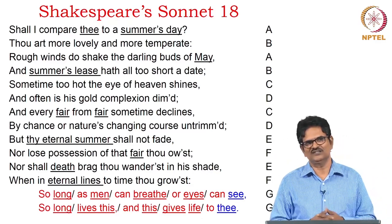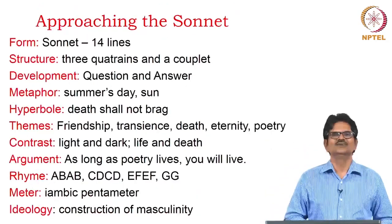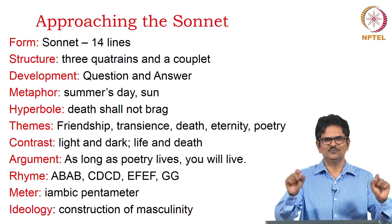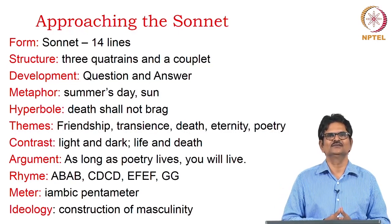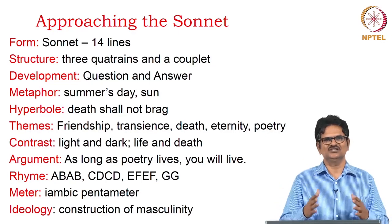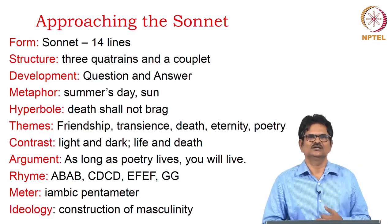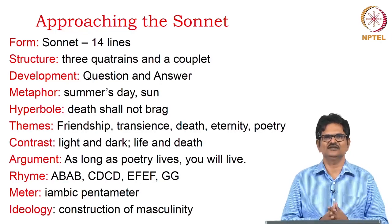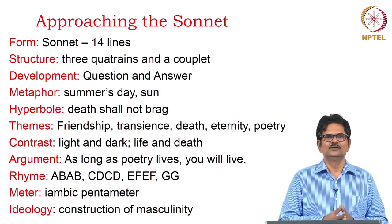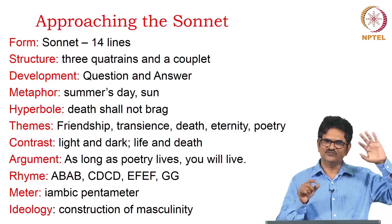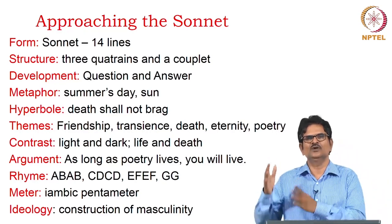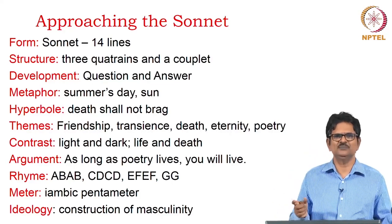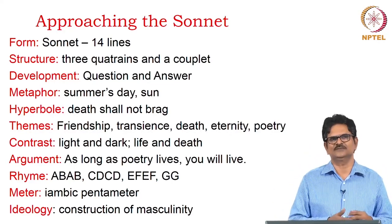This is a poem that Shakespeare wrote for his friend. Sonnet is a poetic convention — it has fourteen lines and a structure. Here we have the Shakespearean sonnet, a variation of the Petrarchan conventional form. We have three quatrains — four lines each — and then one couplet, two lines at the end. The whole poem is developed in the form of a question and an answer.